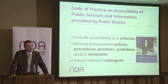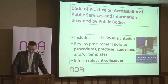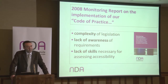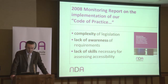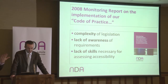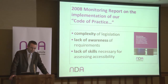Very roughly, we said: include accessibility as a criterion when you're procuring, review all your policies, procedures and templates, and inform any members of staff when you need to. We did a bit of monitoring in 2008 and we weren't particularly happy with the results. A whole lot of people were not applying what Section 27 of the Disability Act 2005 said.